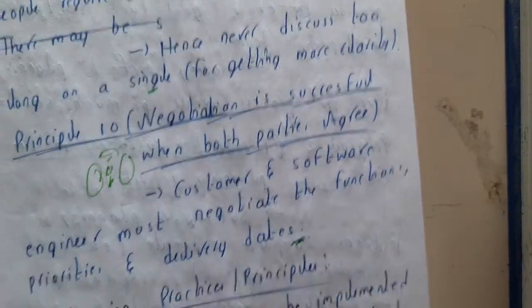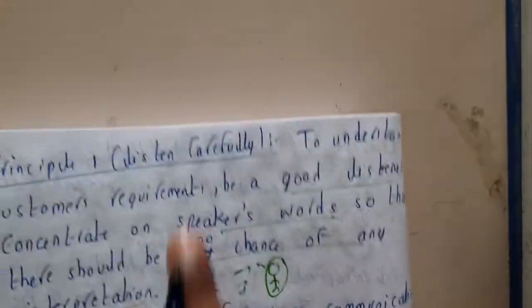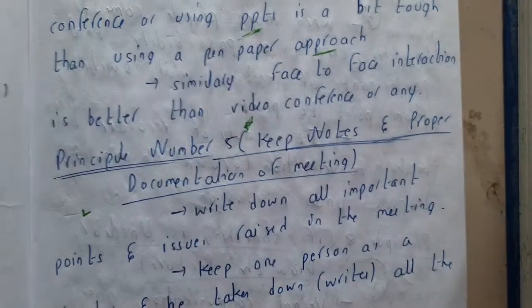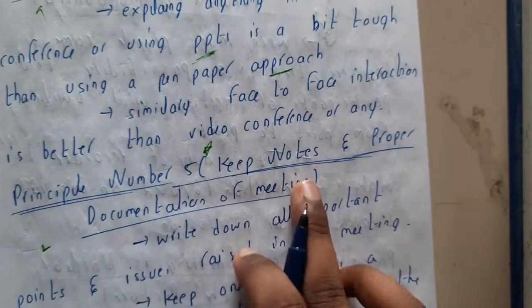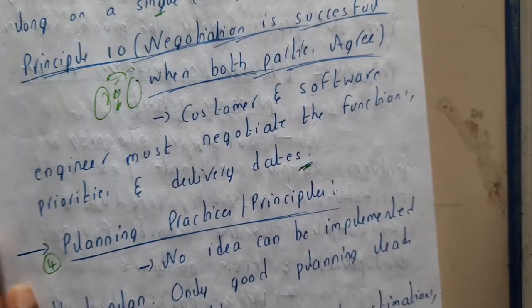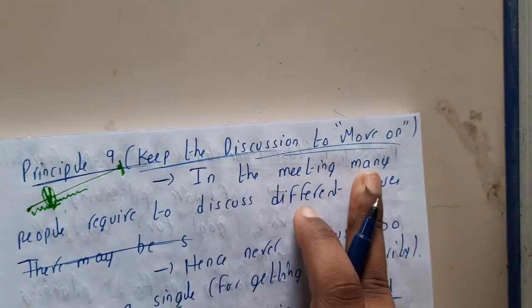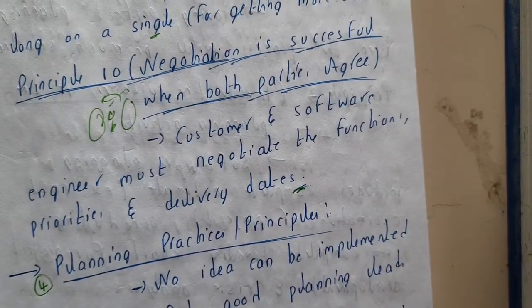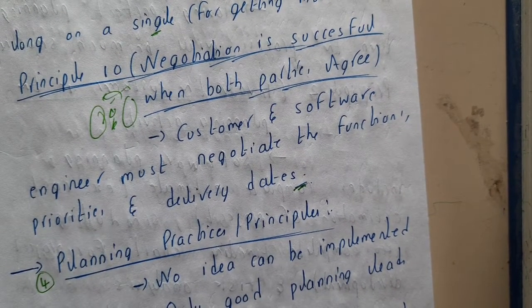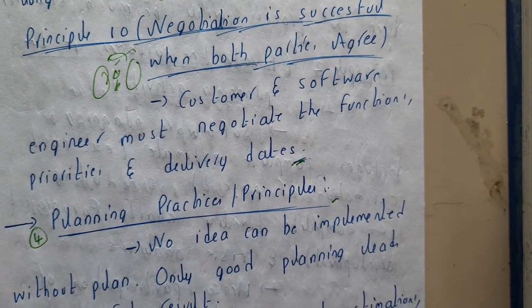So these are the 10 principles for requirement gathering, also called communication principles: listen carefully, prepare before you communicate, prepare to facilitate the meeting, prefer face-to-face communication, keep notes and proper documentation, try to collaborate, keep the discussion focused and modularized, draw pictures when something is unclear, keep the discussion moving, and ensure negotiation is successful with both parties agreeing. In the next lecture we will go through planning practices or principles. Thank you for watching.